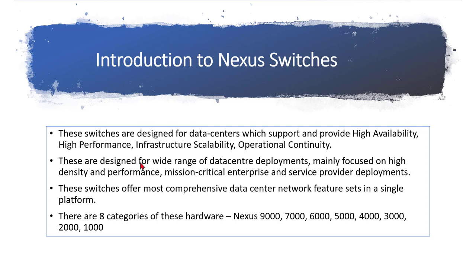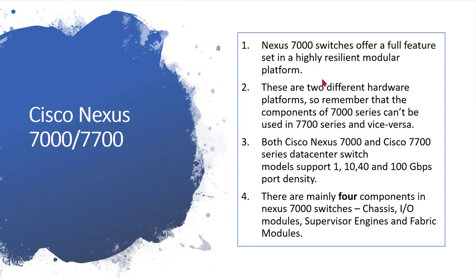Now I'll take you to a slide about the 7000. This is a modular platform, meaning there are modules you can attach or detach. There are two sub-categories: the 7000 itself and the 7700. Architecture-wise and design-wise there is no difference; it is just that the 7700 is more advanced in terms of port density, high throughput, and traffic-handling capacity per module.